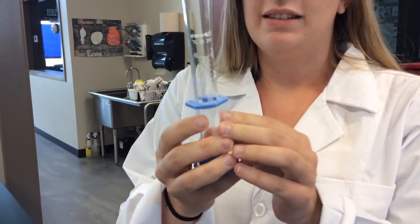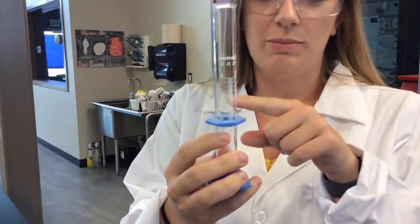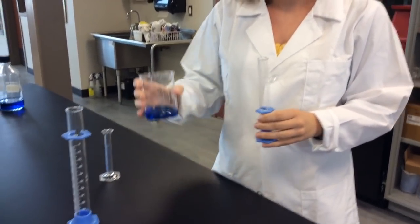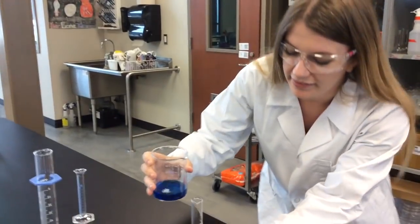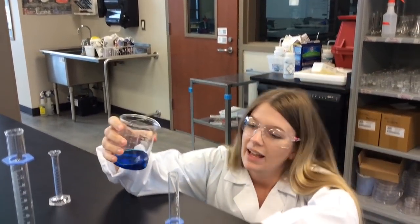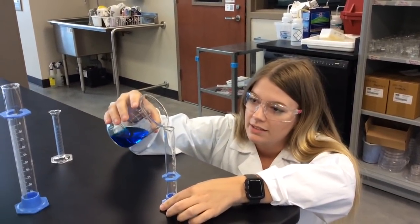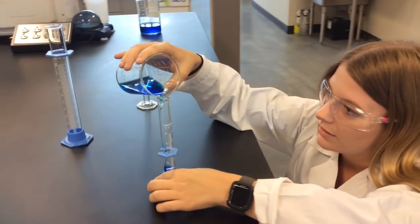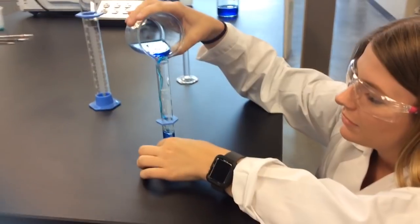What this does is it shows us where the meniscus should be hitting. So what we're going to do is carefully, hopefully I won't spill this, put it on the table and get down at eye level and slowly pour, and carefully pour.